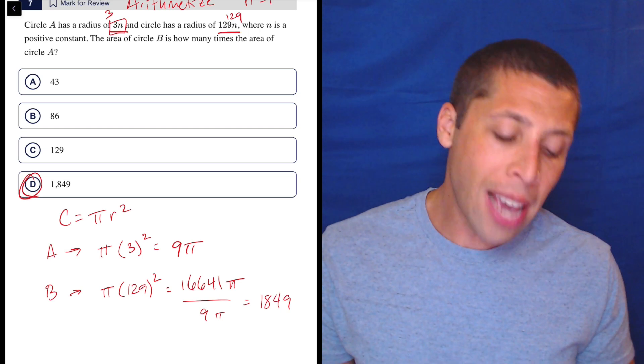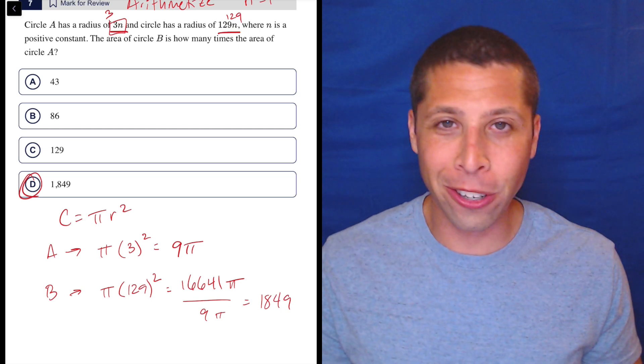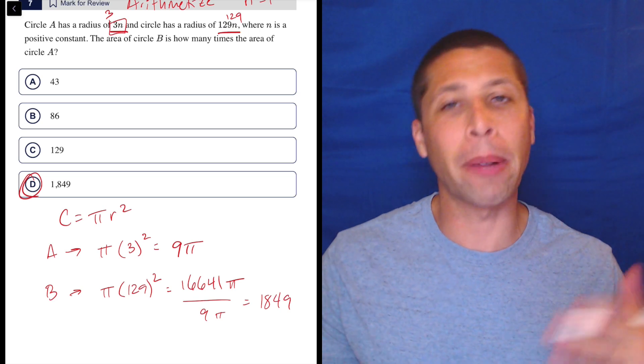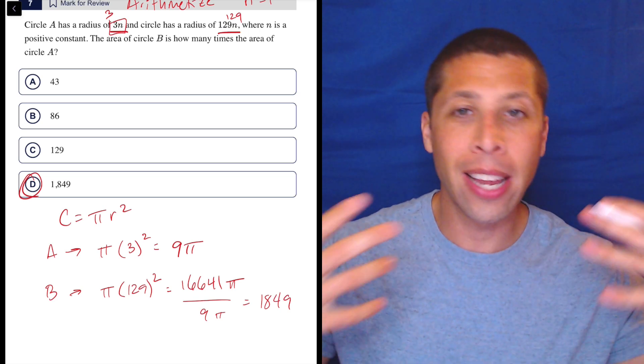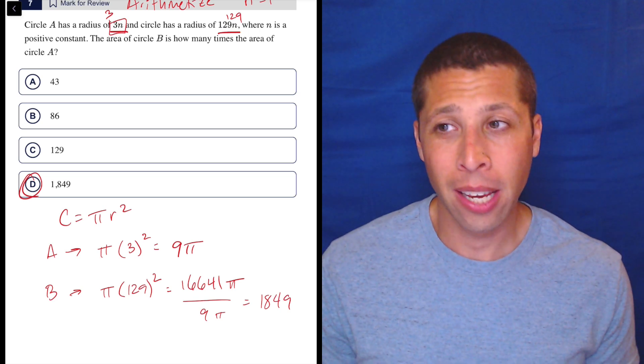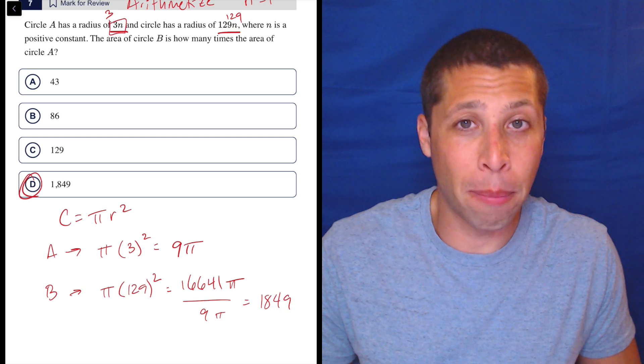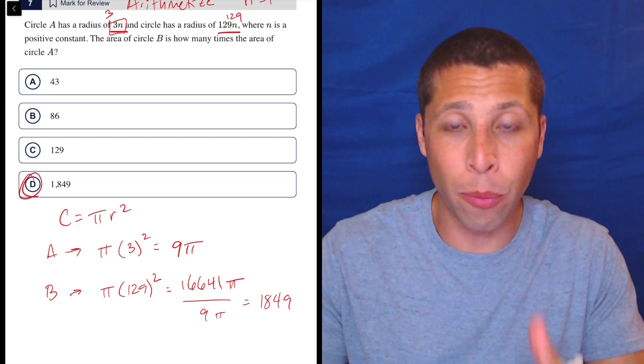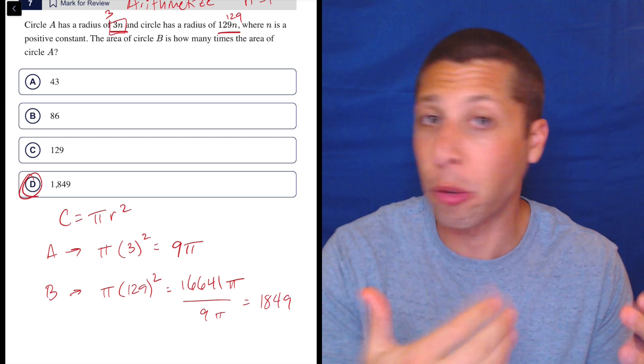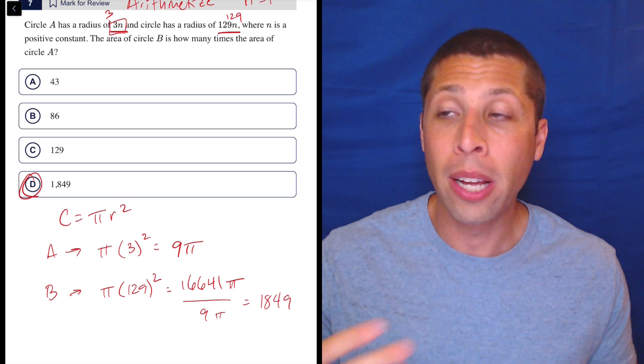Regardless, yes, it's not that much harder to do it with the n's, but I'm just thinking about other questions where there's more things going on. You just have to have that impulse of like, they've twisted this question up. If they just asked you about it with a radius of 3 and a radius of 129, this would be a basic question. There'd be almost no challenge at all.